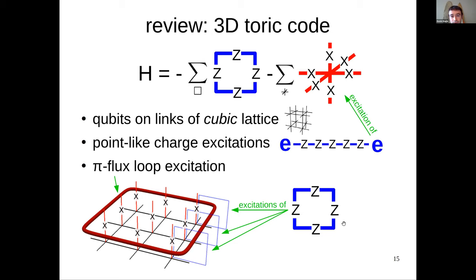I need to review one more thing: the 3D version of Toric code, which describes 3+1D BF theory. On a cubic lattice, we have a plaquette operator and a star operator with 6 Pauli-X operators at each vertex. Charges are created by strings, but plaquette excitations are now loop excitations. Acting with Pauli-X operators on 9 red links excites 12 plaquette operators around a membrane, creating a loop of excitations — a π-flux loop. It's a π-flux because a charge wrapping around the loop gets a minus-one phase.